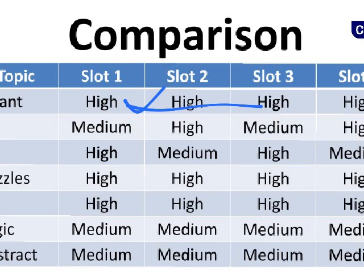Puzzles were there in all four slots — calculation-based puzzles, which were lengthy but doable. The whole paper was lengthy, obviously. It was not difficult, it was lengthy — if you patiently put in 10-12 minutes, each question could be solved. But solving puzzles in the last minute was the main challenge. Across all slots, the puzzle level was almost the same — in fact, Slot 3 and Slot 4 had quite similar puzzles.